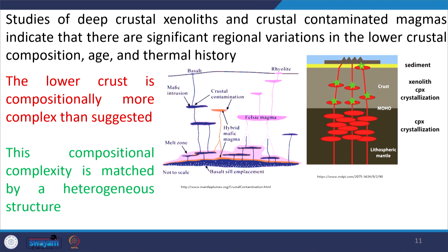The Conrad discontinuity may only be present in terrains that have undergone continental-continental collision, but this is not always true. By and large, the lower crustal composition is mostly anorthositic and the upper crustal composition is mostly granitic to granodioritic. Deep crustal xenoliths and crustal-contaminated magma indicate significant regional variation in lower crustal composition, age, and thermal history, causing crustal evolution. The crust is not formed at a single temperature regime — it varies from place to place.